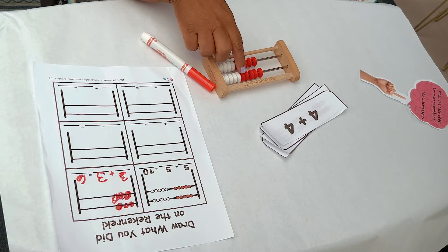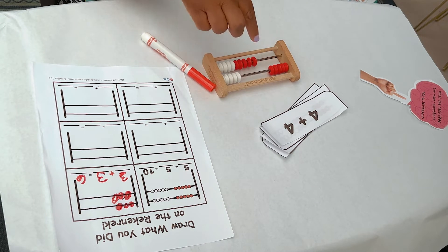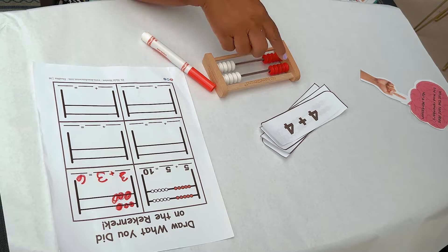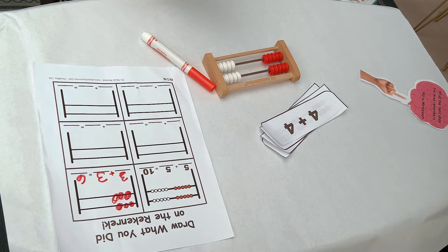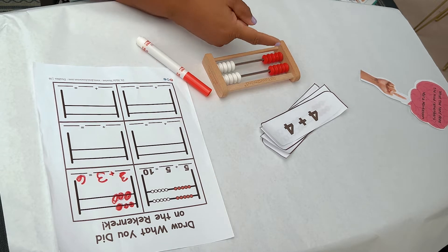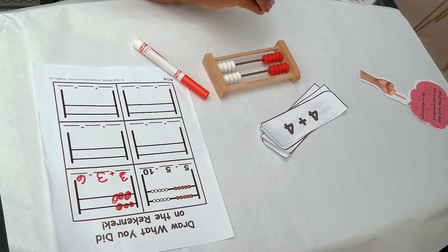I'm going to explore doubles. I pull a card. It says four plus four. I build it. My hand moves four and four. I discuss it. Four and four make eight.